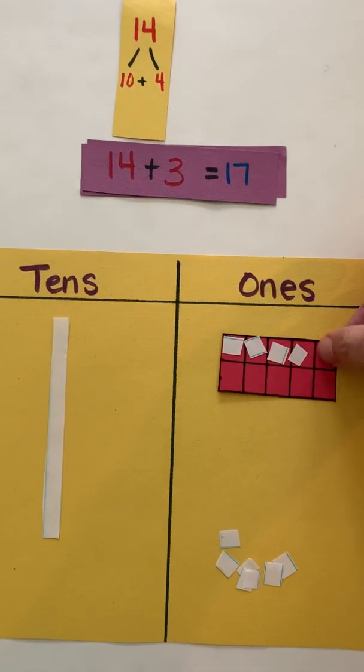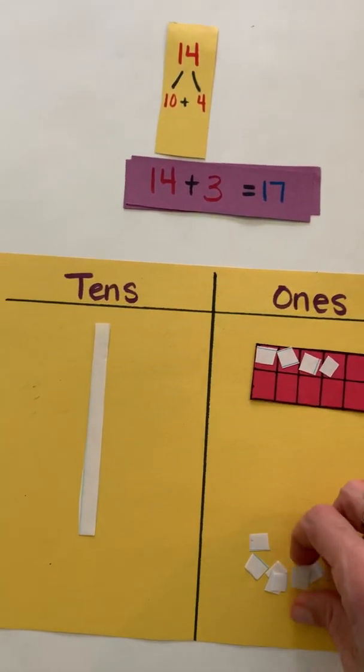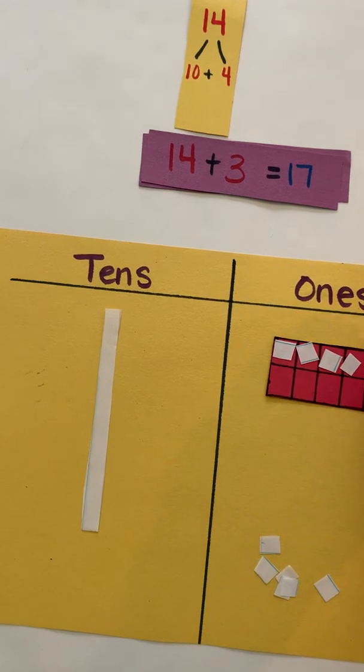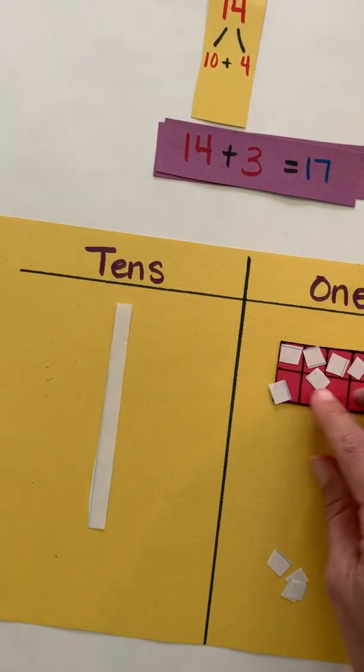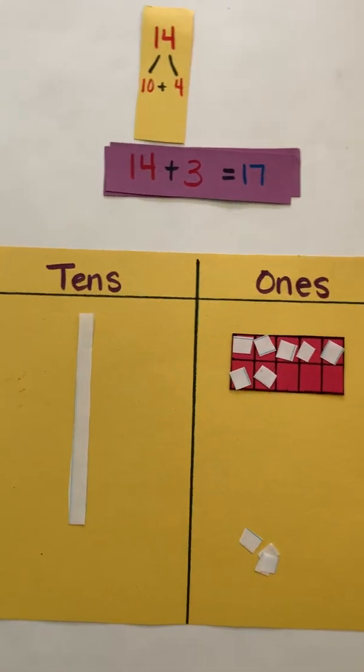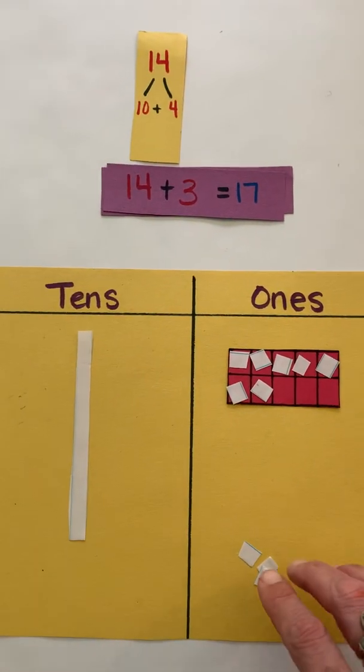So I can represent 14 this way and then I want to add on three ones. One, two, three. And so here now you can see once again that 14 plus 3 is 17.